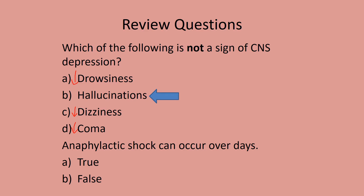True or false: anaphylaxis shock can occur over days. This is false. Anaphylaxis is usually quick — rapid onset — whereas building up histamine levels can take a couple of days to develop, and once you hit that threshold you'll get your allergy reaction. When introducing food to your child, spread them out four or five days apart so you know exactly what's causing the allergy.